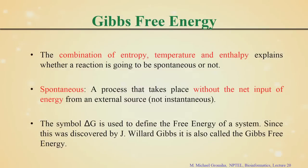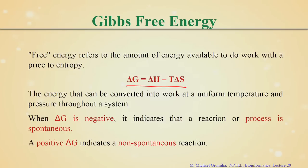Now we have enthalpy and entropy, and along with temperature, we can explain free energy — called Gibbs free energy. This free energy is spontaneous if there is a net release of energy. We call it Gibbs free energy because it was first discovered by J.W. Gibbs. We can combine enthalpy, entropy, and temperature using the equation: delta G equals delta H minus T times delta S.